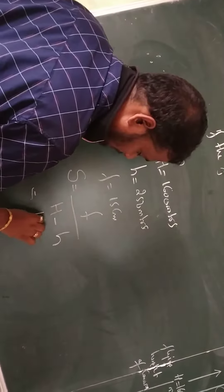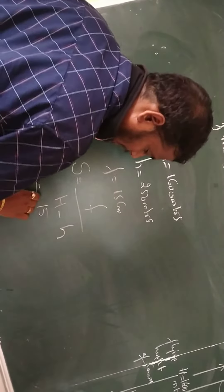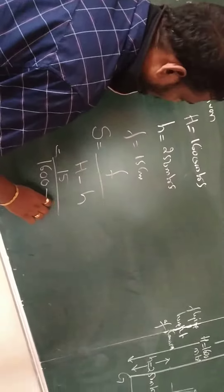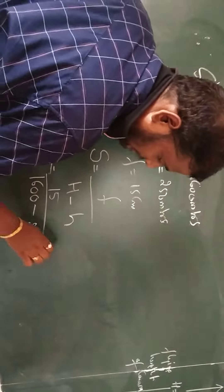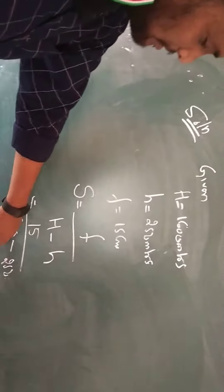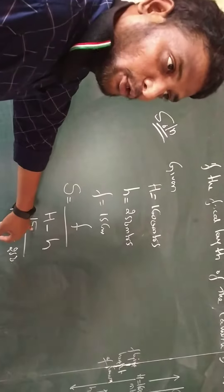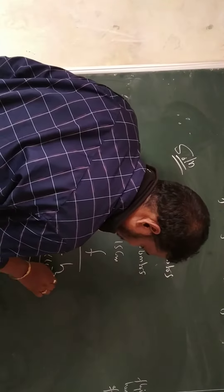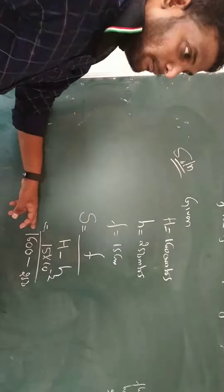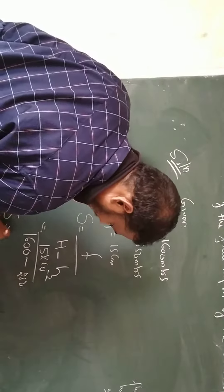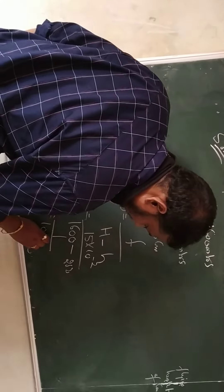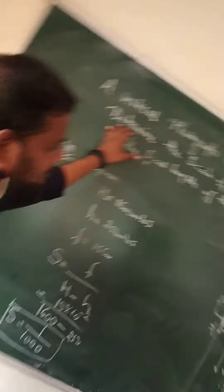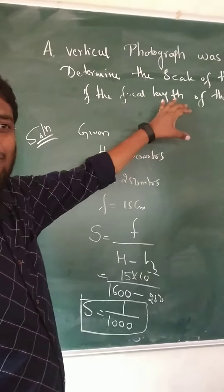So f is 15 — the focal length of the camera — capital H is 1600, and small h is 250 meters. We have to convert the units so that they are consistent, multiplying by 10 to the power of minus 2 to convert centimetres into meters. We will then get the scale, and like this we calculate the scale of the vertical photograph.